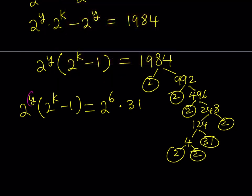Which means that y is equal to 6. And from here, k is equal to 5. All right? Because if you set this equal to 31, you get 32. And this is 2 to the fifth power. Great.